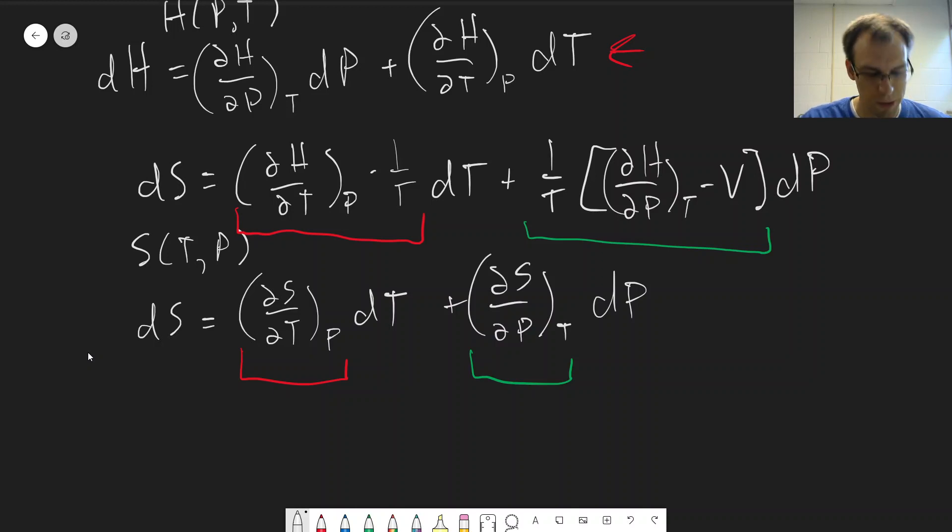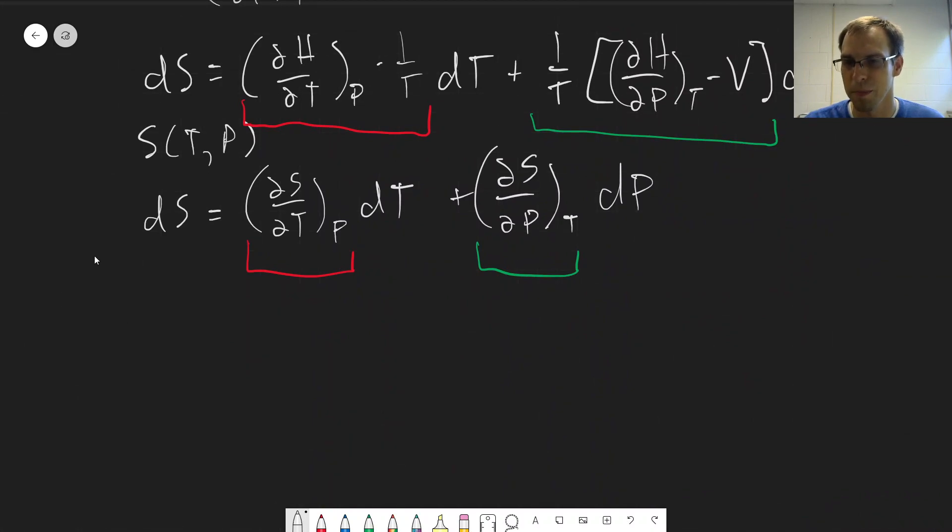Again, we're just interested in the one in red. The other one's not as useful. Particularly because it gives us a nice relationship here that (dS/dT) at constant P is equal to (dH/dT) at constant P divided by temperature.